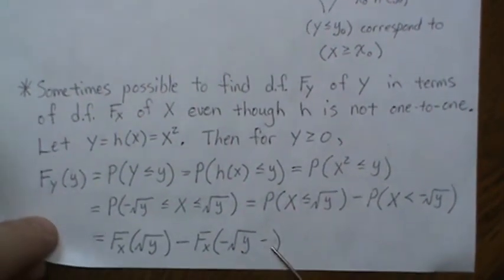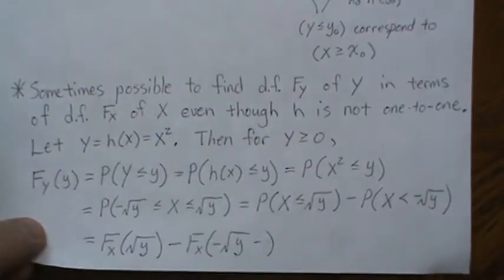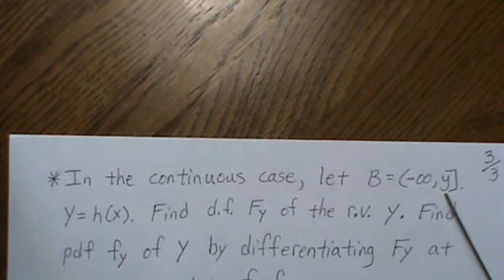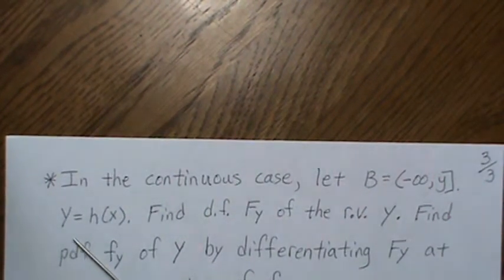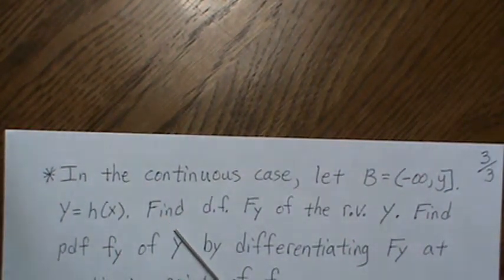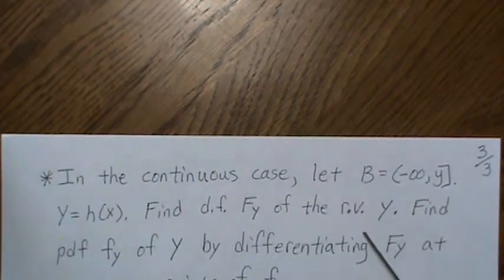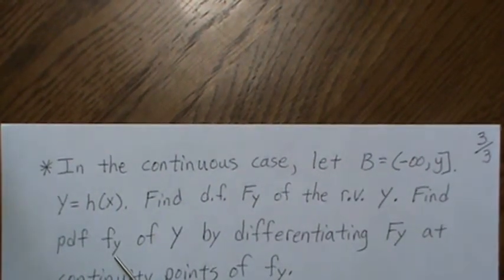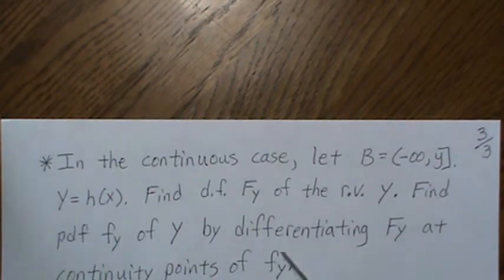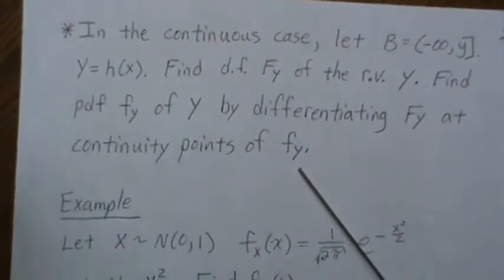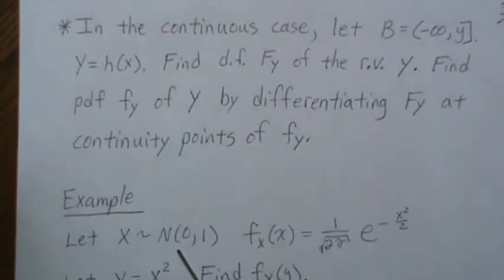In the continuous case, let B be the set of all values less than or equal to some y, and let Y = H(X) be a transformation. We find the distribution function F_Y of the random variable Y, and then find the PDF f_Y by differentiating the CDF at the continuity points of f_Y.